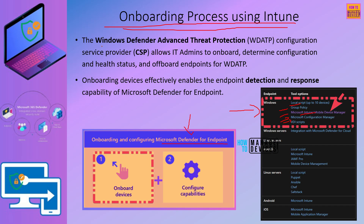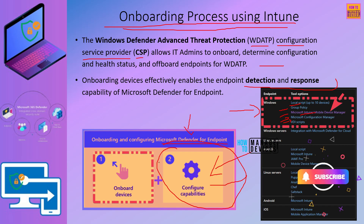In Intune, we are going to use the Windows Defender Advanced Threat Protection Configuration Service Provider — that is, the WDATP CSP — to configure onboarding policies. This is similar to other CSP policies, but we don't need to create any custom CSP policy within Intune. There's an automated onboarding process which I am going to show in the demo: how to create that policy, how to deploy it, etc. Once onboarding is done, the second step is to configure capabilities and additional policies. We can also deploy the Defender security baseline from Intune for these managed devices, which we will cover in a different video.